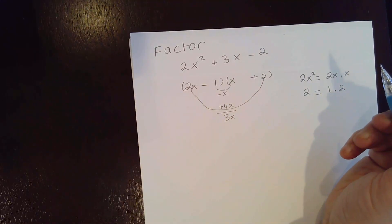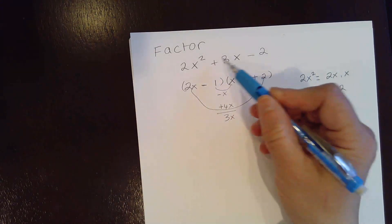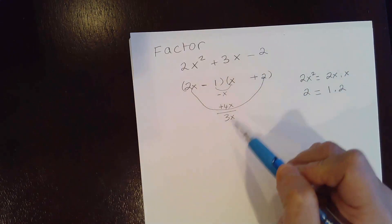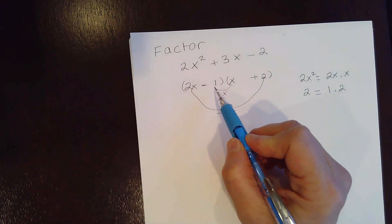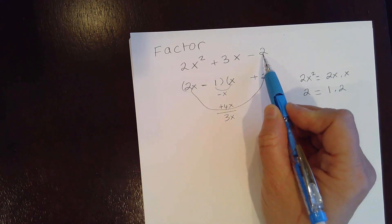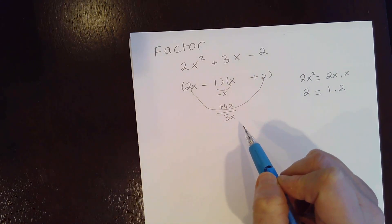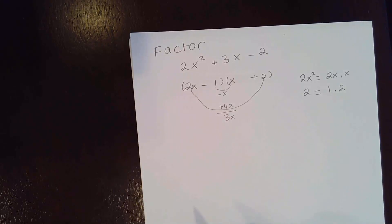So this way you can get the middle term. And double check the constant as well. You're going to see that negative 2, negative 1 times 2 gives you negative 2. And this must be the correct factoring.